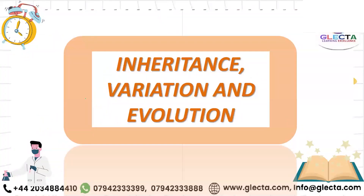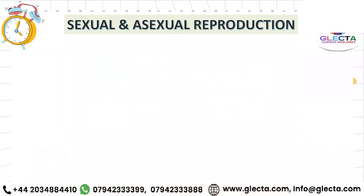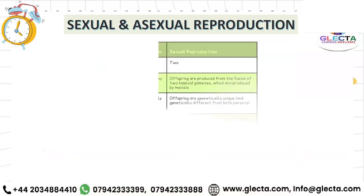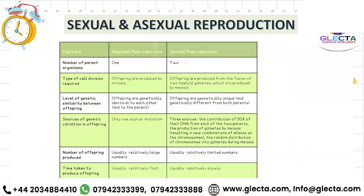The next unit is inheritance, variation and evolution. Inheritance is the passing of genes from parents to offspring. There are two types of reproduction: sexual - involving two parents and meiosis - and asexual - involving one parent and mitosis. Because asexual reproduction has only one parent, offspring are genetically identical. In sexual reproduction two parents are involved, so offspring are genetically different. Asexual reproduction produces lots of offspring; sexual produces fewer.